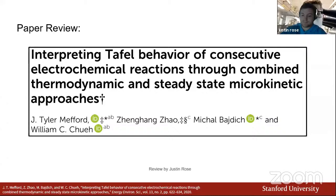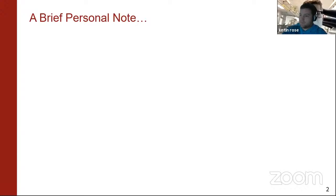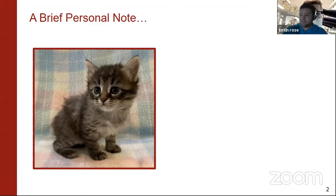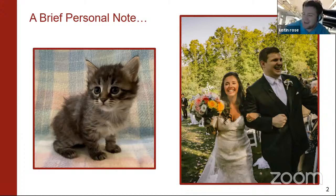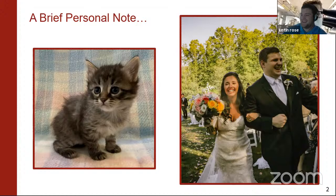First, a brief personal announcement: Denise, my girlfriend, and I — after dating for five years — finally decided to get a second cat. And also we got married. A couple weeks ago we flew back to Pennsylvania and had a wedding on my family's private property. So you don't get to call her your girlfriend anymore — this is my beautiful wife Denise.